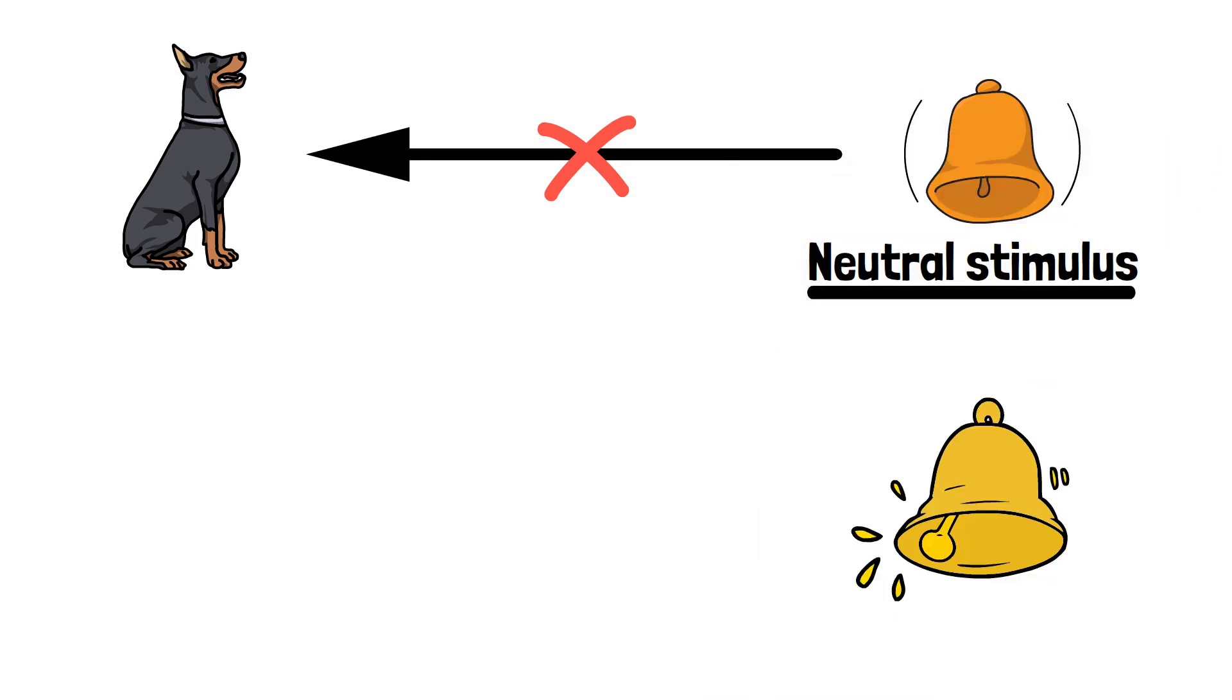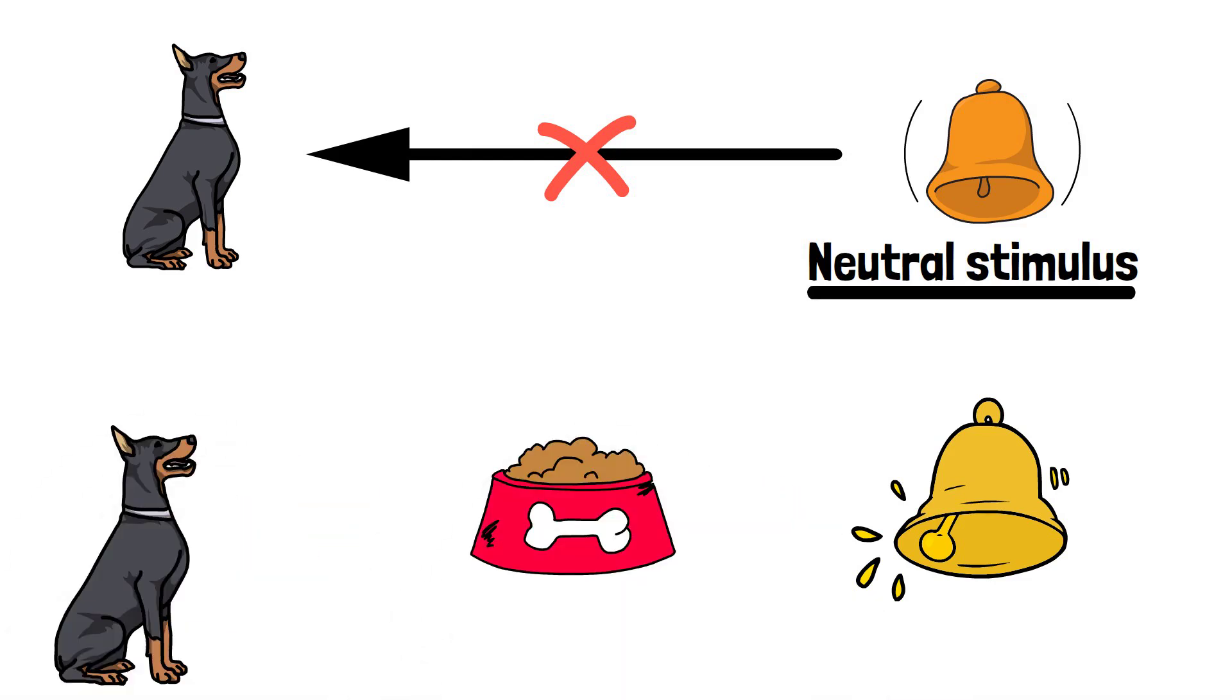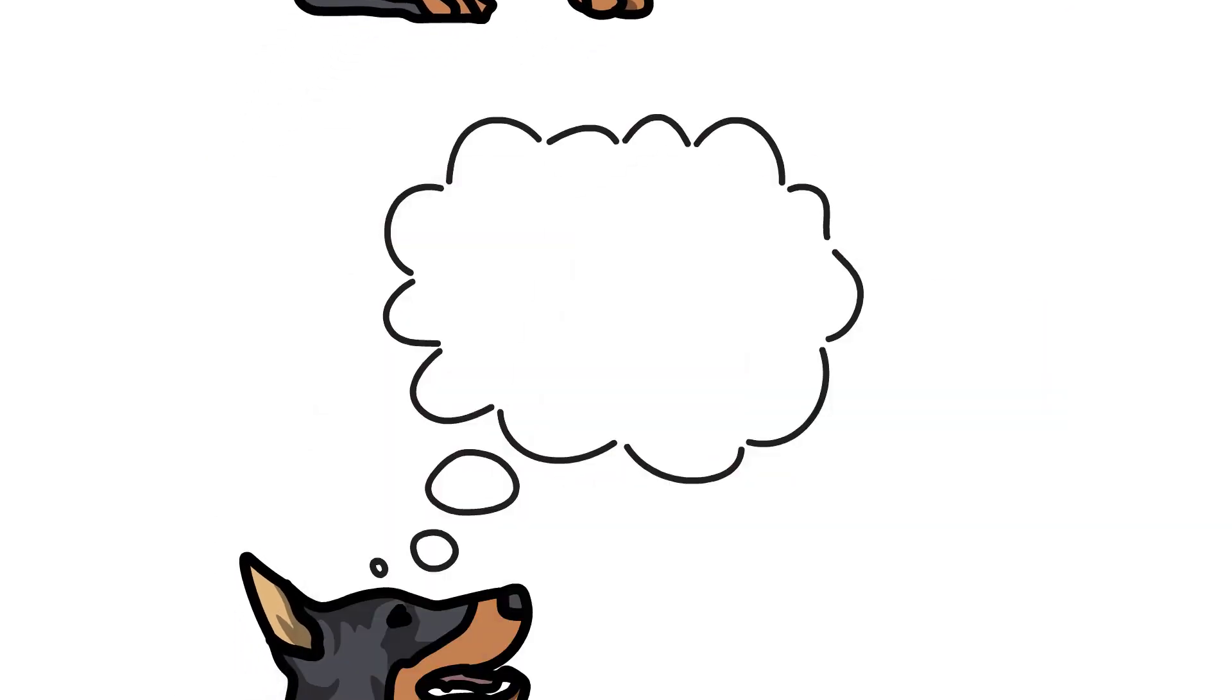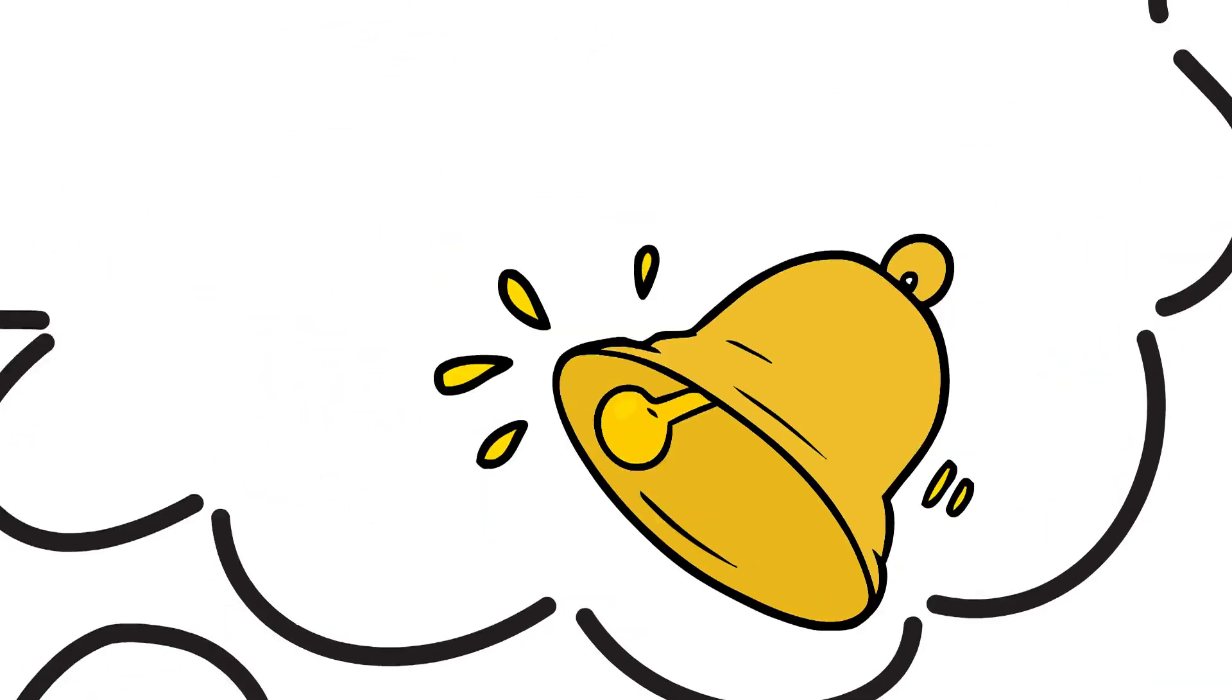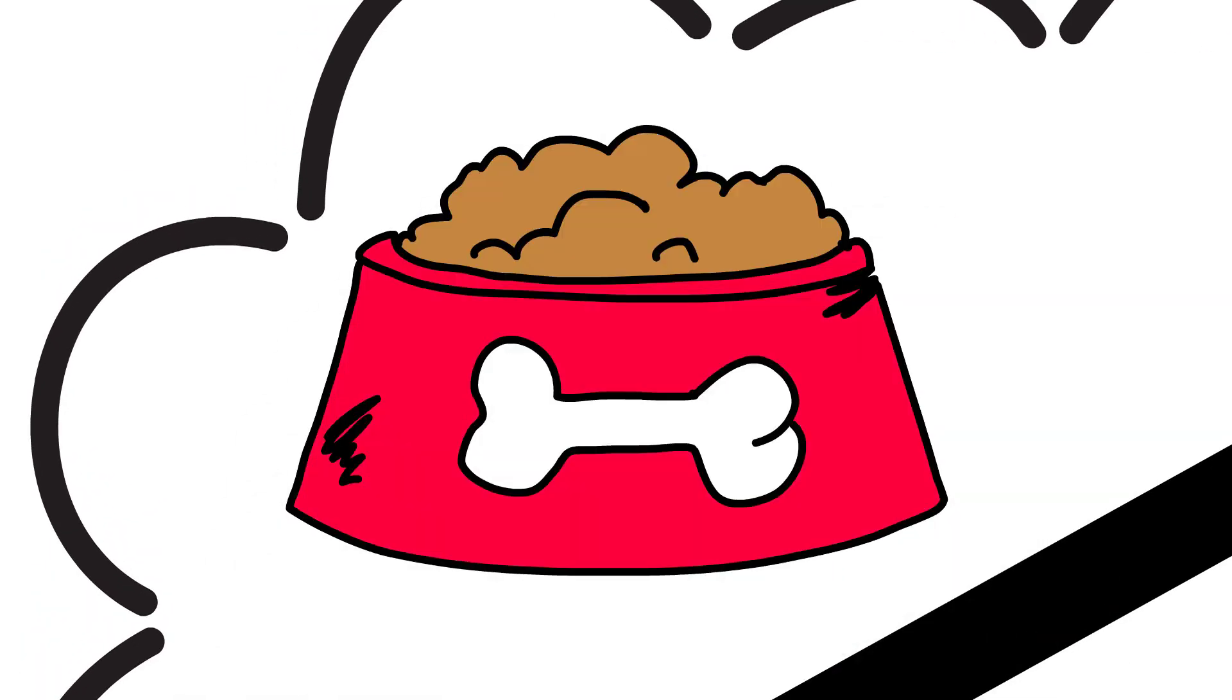Pavlov then started to ring the bell just before presenting the food to the dogs. After several repetitions of this pairing, the dogs began to associate the sound of the bell with the impending arrival of food.